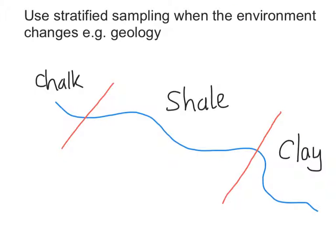And in this final example, we use stratified sampling when the environment changes. In this case the geology has changed along this river which is running from A to B. And it would be unwise just to collect your data in the chalk geology or the clay. You want an even representation of all three areas.